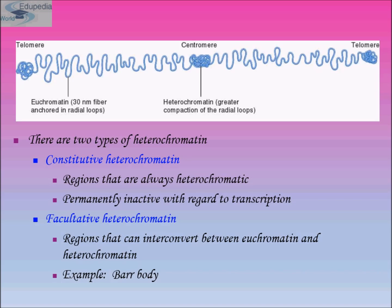To put it simply, chromatin is primarily the combination of deoxyribonucleic acid (DNA) and other types of protein. Chromatin is responsible for packaging DNA into smaller volumes so that they can fit inside the cell. It is also responsible for strengthening the DNA for mitosis and meiosis to take place. Chromatin also prevents damage to the DNA and controls gene expression and the replication of DNA.